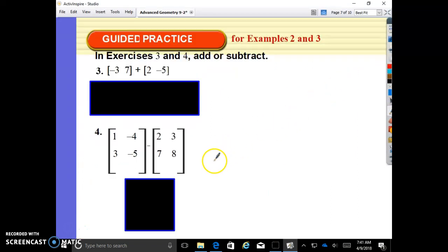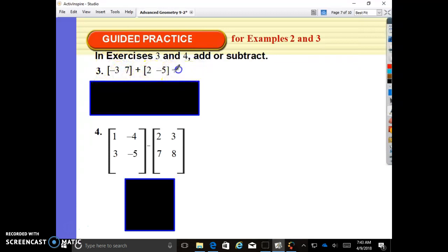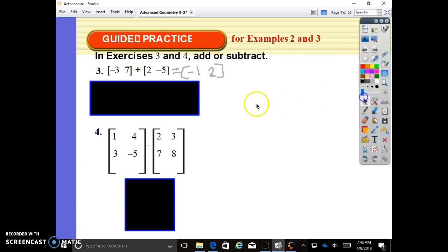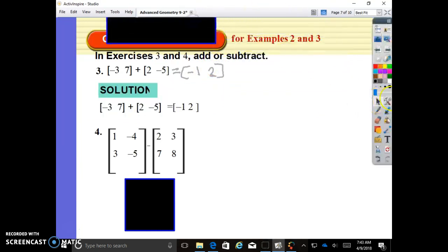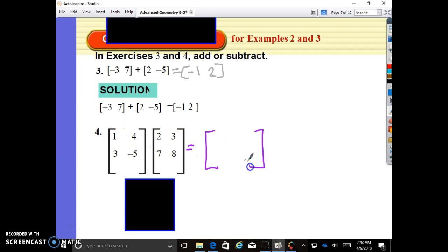In exercises three and four, add or subtract. I want you guys to take a minute to attempt number three. I'm going to pause the video while you guys try. Looking at this first problem, negative three plus two is negative one. Seven plus negative five is two. And our answer should look like that. Let's go on to the next one. One minus two. We have a two by two, so we're going to have a two by two answer. One minus two is negative one. Negative four minus three, negative seven. Three minus seven, negative four. Negative five minus eight, negative thirteen.